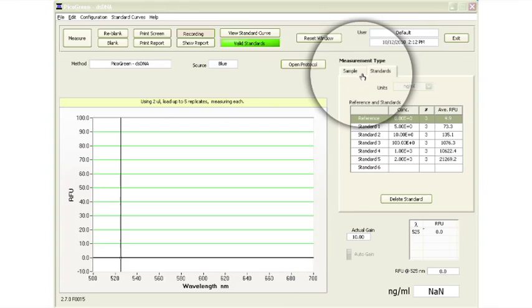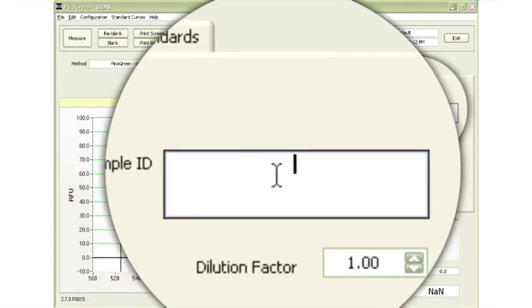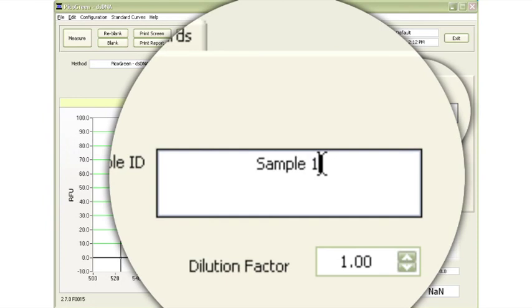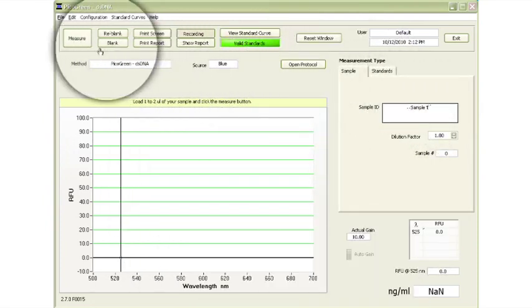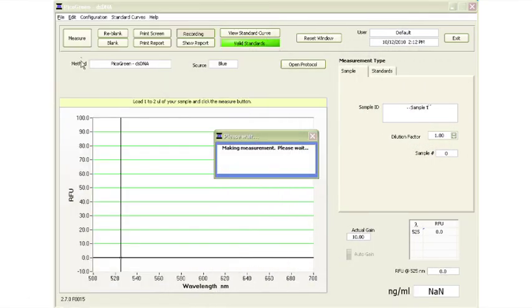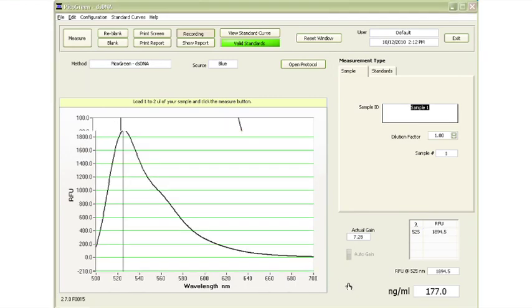Once the standard curve is complete, select the Samples tab, enter the respective sample ID information, and measure each unknown sample. A valid curve indicates that the minimum number of standards has been met. The DNA concentration is automatically determined based on the standard curve.